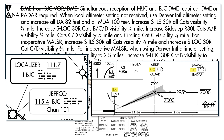The next note states that simultaneous reception of both the localizer signal and the BJC-DME are required. The next point states that DME is required, but it allows for you to not have DME as long as you're in radar contact from ATC, so one or the other is required.